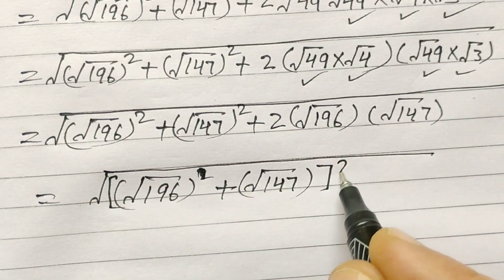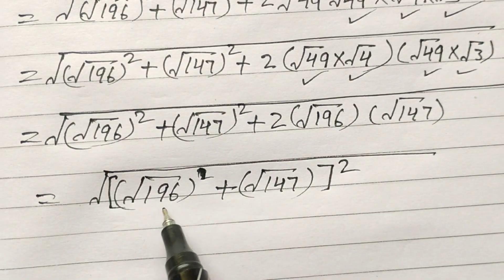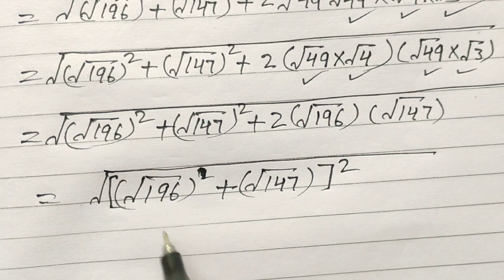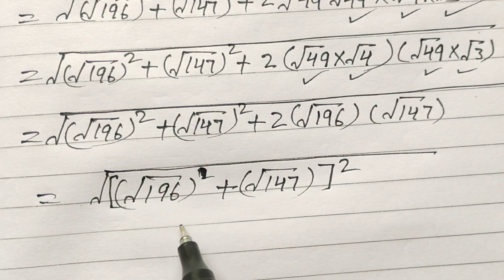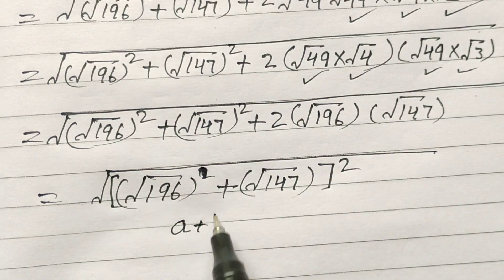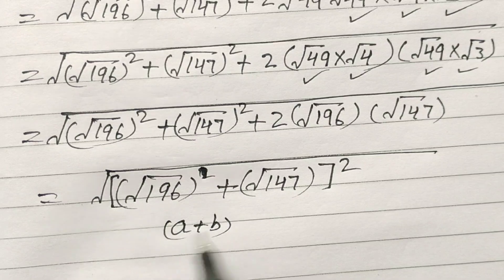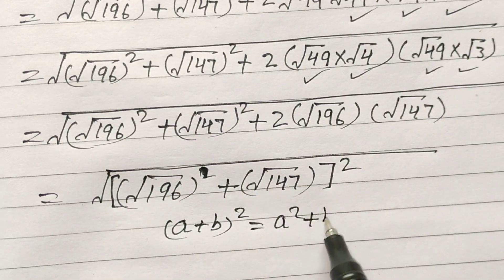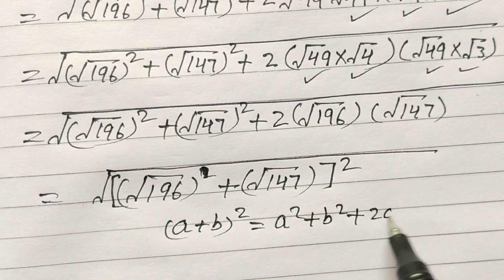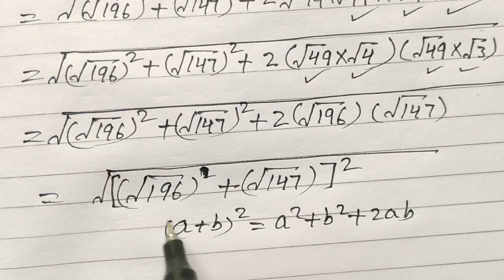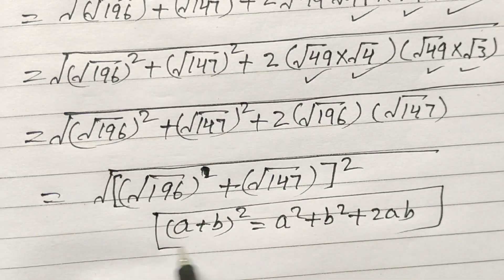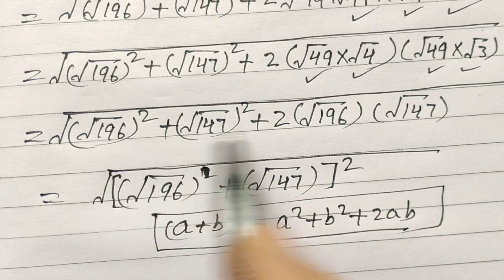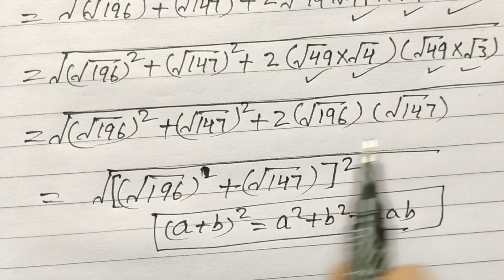Right? If we express this, we get this, because a plus b whole square is equal to a squared plus b squared plus 2ab. So if we apply that formula, we will get this expression.